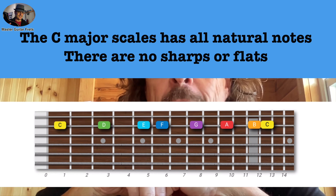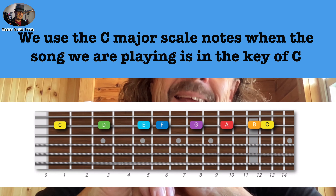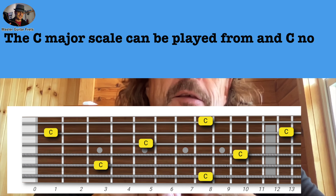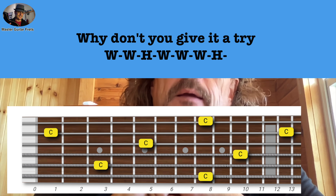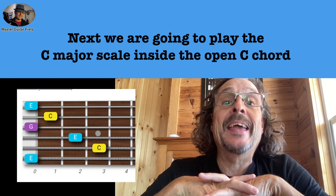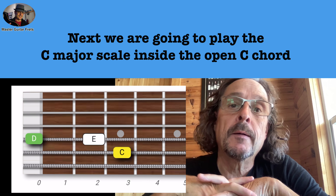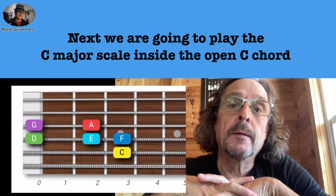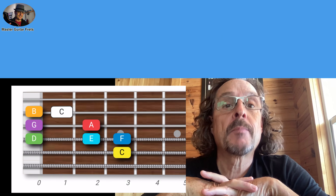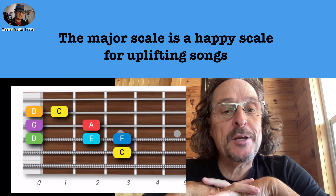We use the major scale notes when the song we are playing is in the key of C. The C major scale can be played from any C note using the major scale formula. Why don't you pause here and give it a try? Next, we are going to play the C major scale inside the open C chord. The major scale is a happy scale for uplifting songs, so we choose the C major scale just for that.